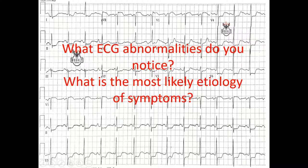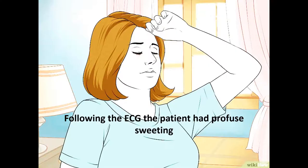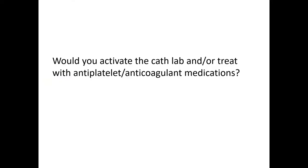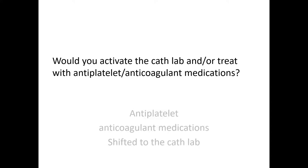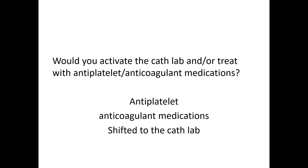As this patient presented with chest pain and ECG changes, we considered acute coronary syndrome. While doing the ECG, the patient showed signs of hypoperfusion — profuse sweating and blood pressure started to drop. So we thought about activating the cath lab and we gave this patient antiplatelet and anticoagulation.